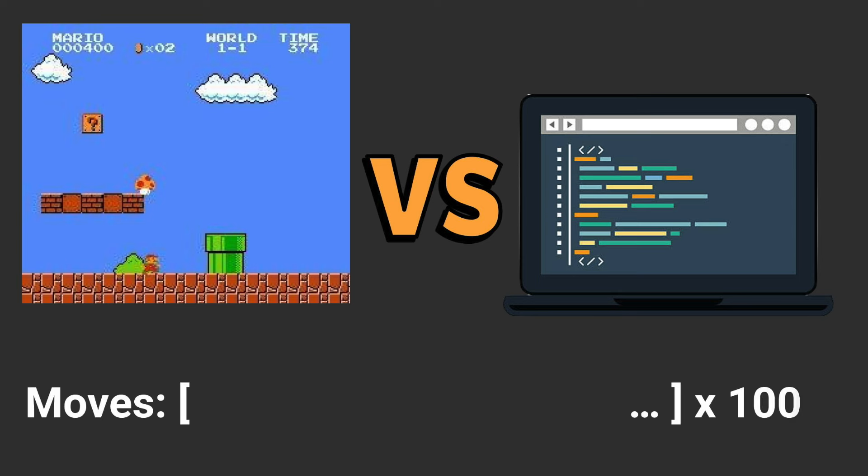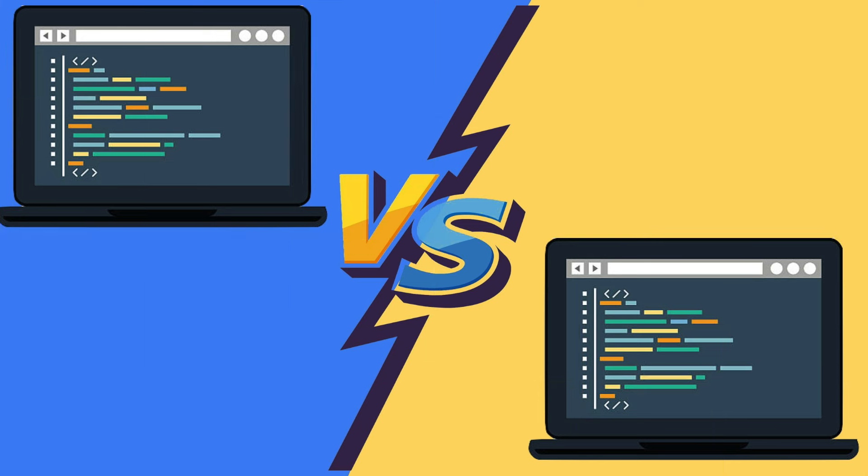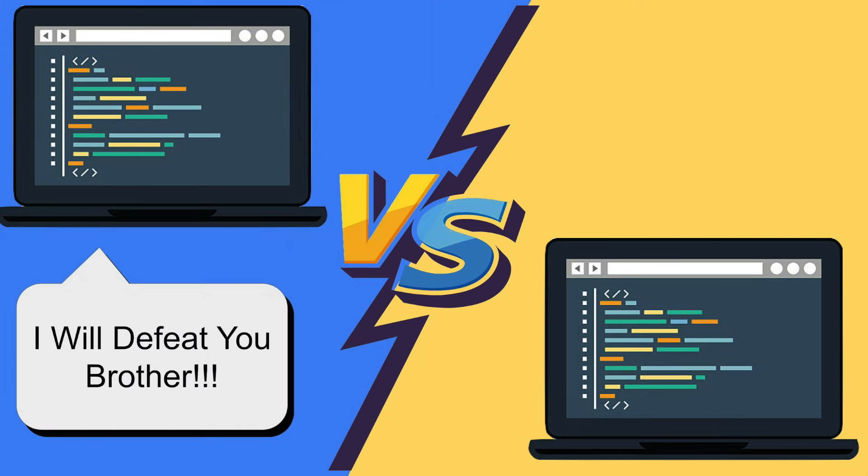Each AI may have 100 moves it's allowed to make and 4 possible moves, being left, right, up, and down. From there, the AI will then play the game alongside multiple other versions of itself.